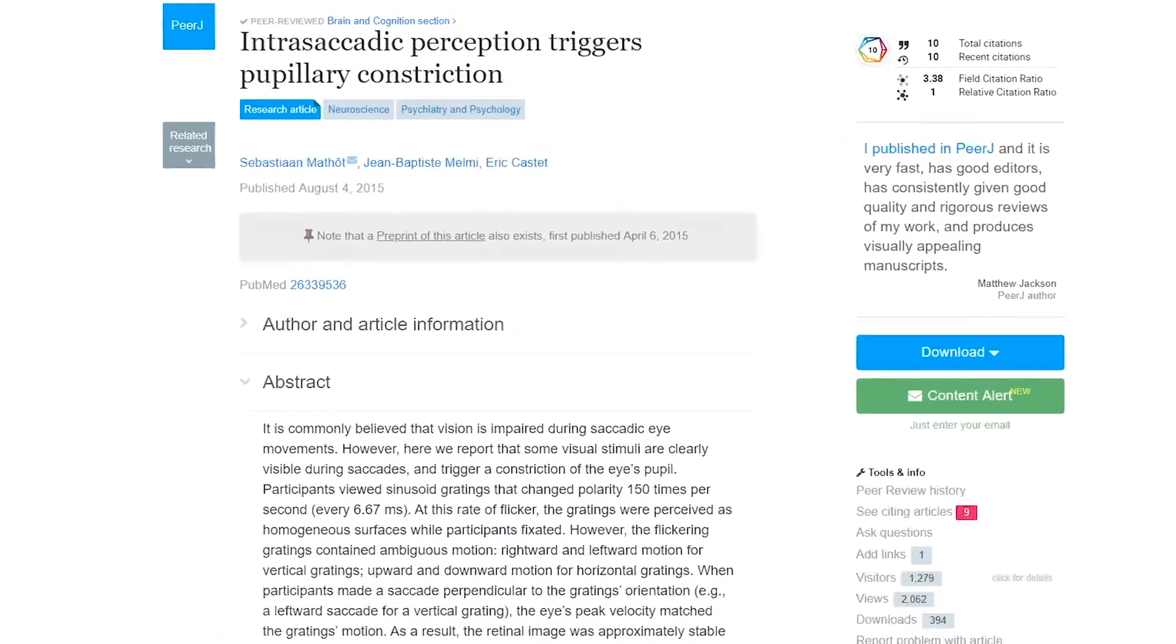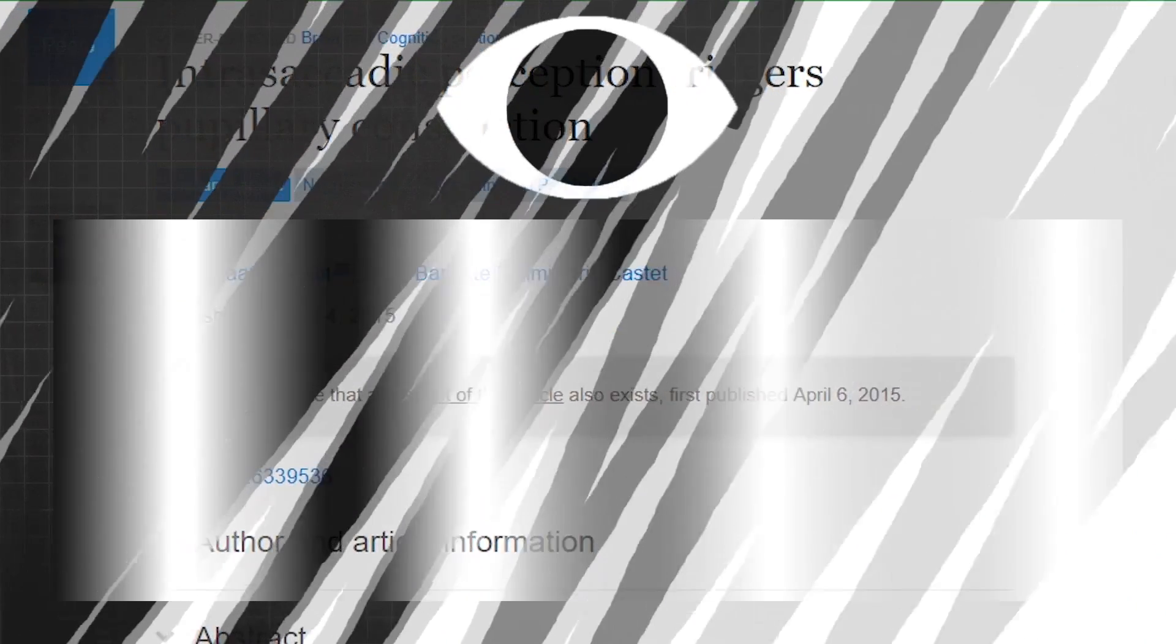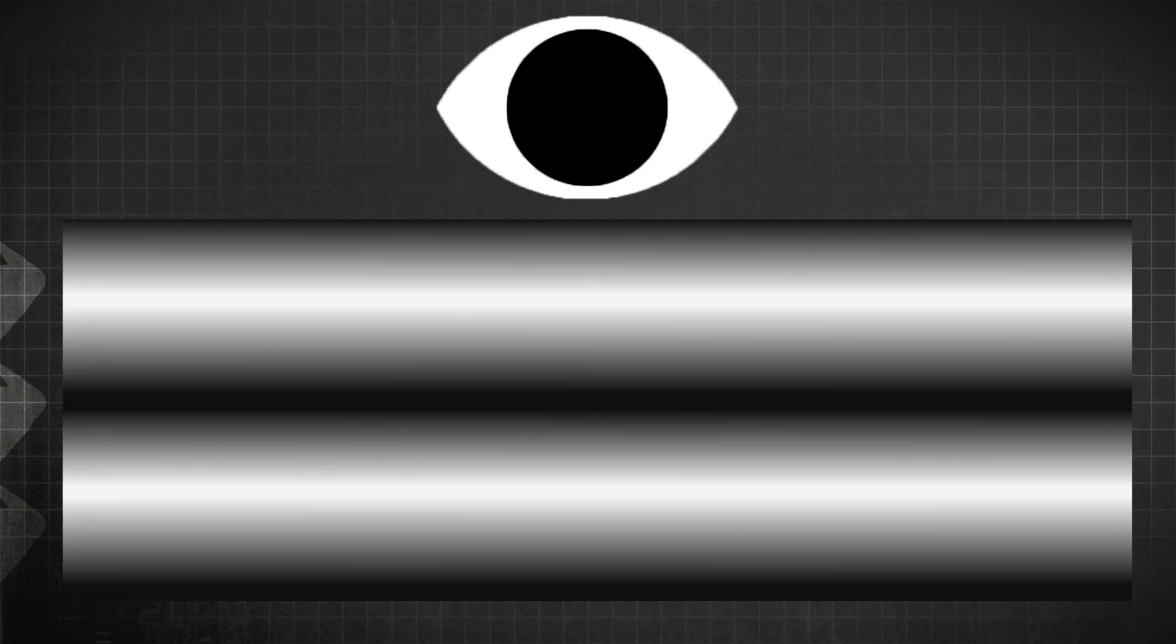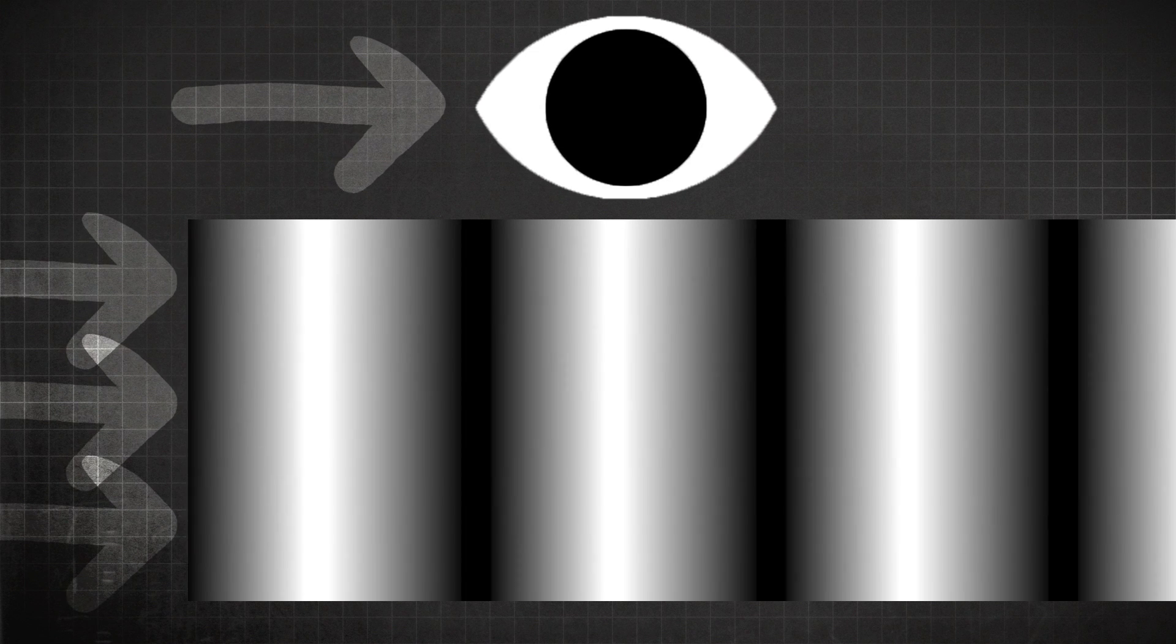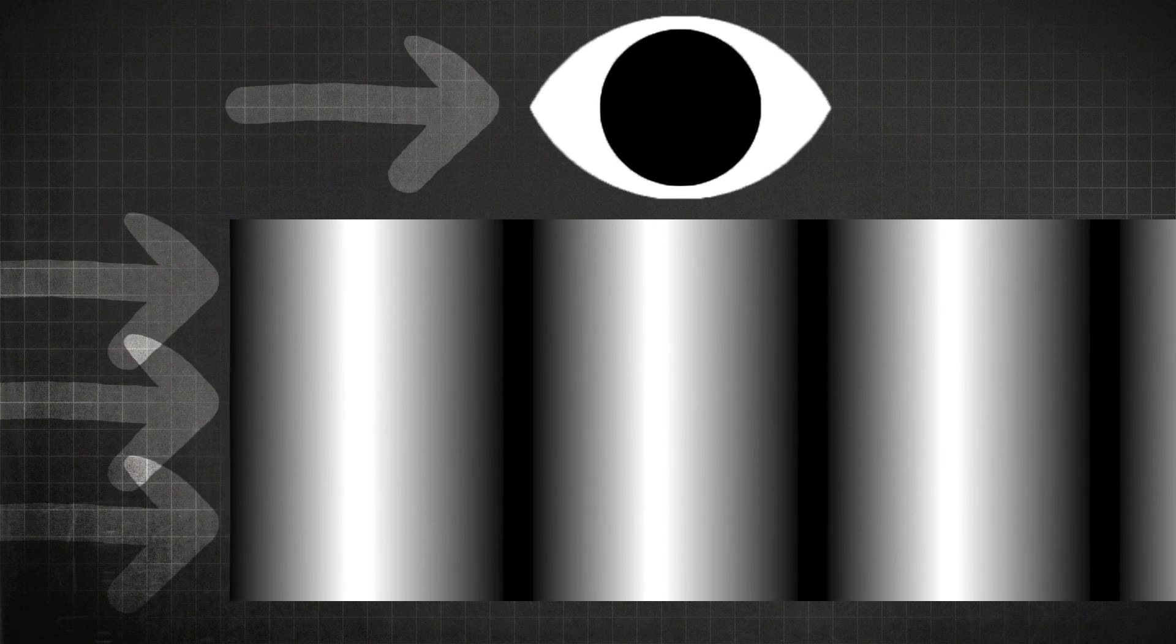But a study in 2015 showed that in fact you don't go blind when your eyes move. The researchers showed super fast flickering vertical and horizontal lines moving across the screen and found that the lines usually blurred together, but you could make them out when your eyes were moving and matched up with the speed of the lines moving across the screen. So you're still seeing when your eyes move.